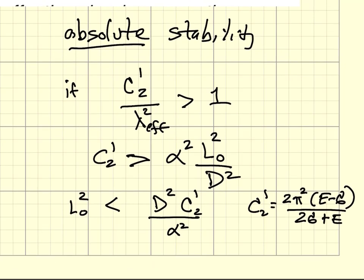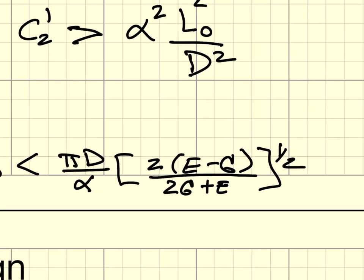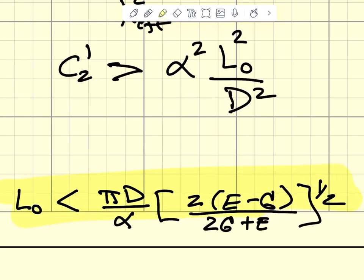We put all of those things together and find that the condition for absolute stability is that the unloaded spring length has to be less than π times the coil diameter divided by alpha, times (2E minus G over 2G plus E) to the one-half power. So there is our condition for absolute stability.